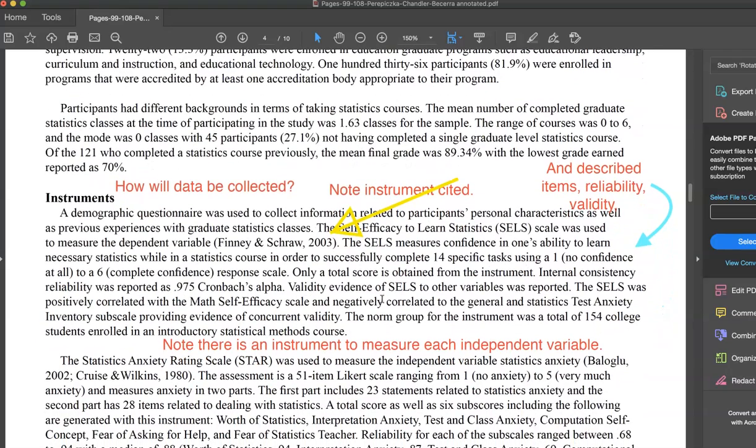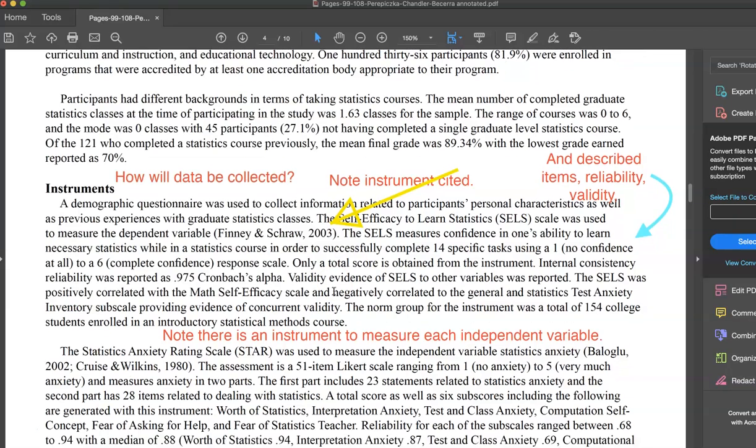Then it goes to how the data will be collected. It starts out with a demographic questionnaire for some of the basic characteristics they need about the classes and stuff so that they can answer some of the questions. Then they have an instrument, self-efficacy to learn statistics scale, which measures the dependent variable. And they've given a brief description of that with the reliability and validity information to the specific population that they're trying to work with.